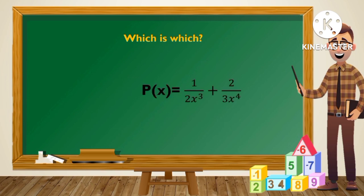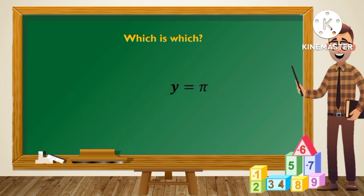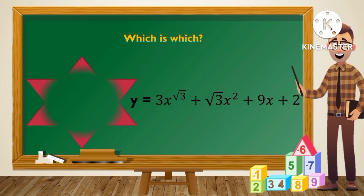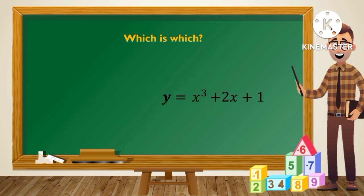Number 5: p of x is equal to 1 over 2x cubed plus 2 over 3x raised to the fourth power. Number 6: y is equal to pi. This is an example of a polynomial function. Number 7: y is equal to 3x raised to the square root of 3 plus square root of 3x squared plus 9x plus 2. Number 8: x is equal to x cubed plus 2x plus 1. This is a polynomial function.